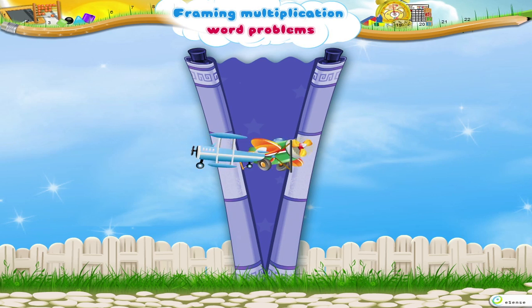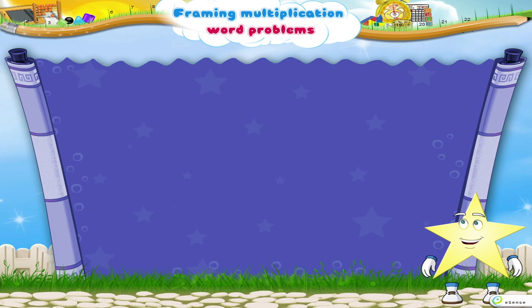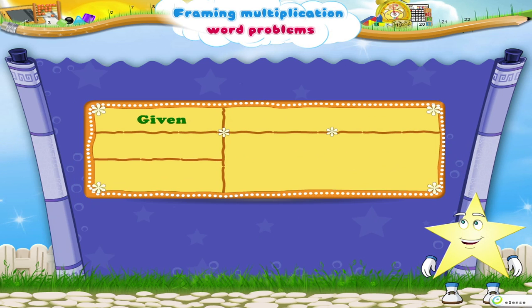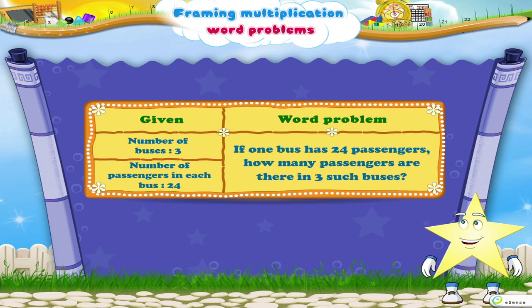Form another word problem to revise what we have learned. The information given to you is: number of buses — 3, passengers in one bus — 24. The word problem is: one bus has 24 passengers. How many passengers are there in 3 buses?